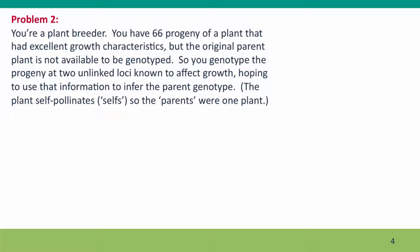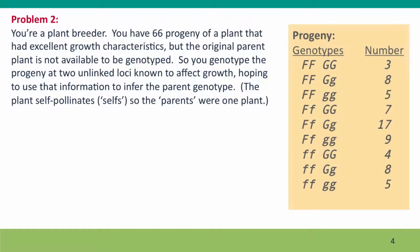Here's the problem. You're a plant breeder. You're breeding a plant for improved growth, and you've got progeny of a plant that grew well, but you don't have the original parent plant, so you can't genotype it — it died. So you genotype the progeny at two loci that are known to affect growth, and you want to use the progeny genotype information to infer what the parent genotype was. The plant self-pollinates, so both parents are going to be the same parent, and the loci that you genotype them at are unlinked, so you don't need to worry about crossing over.